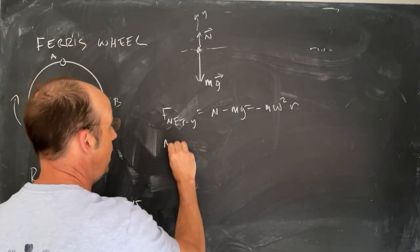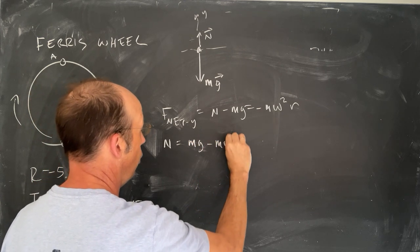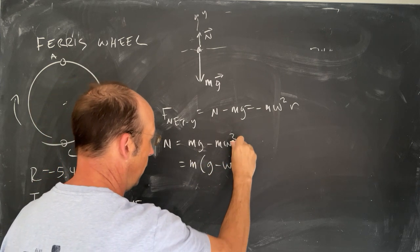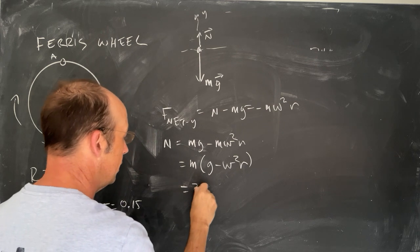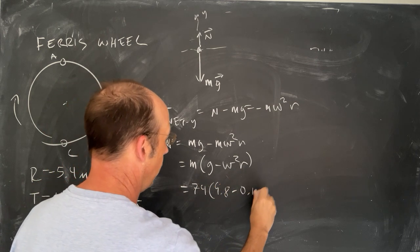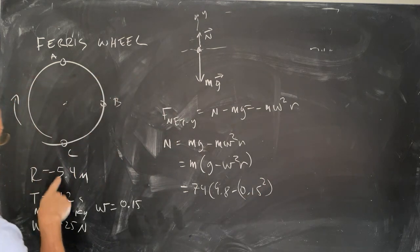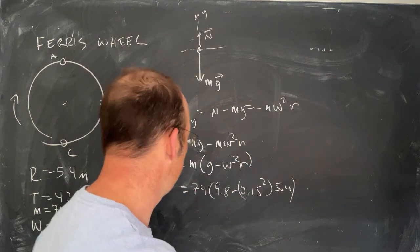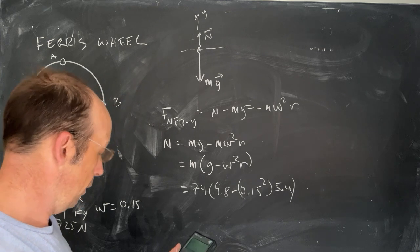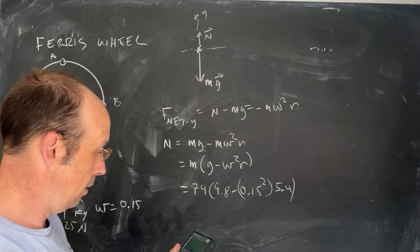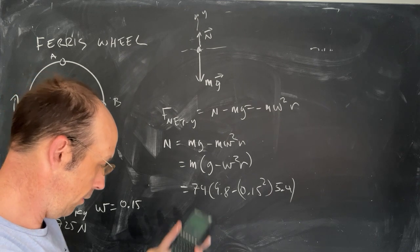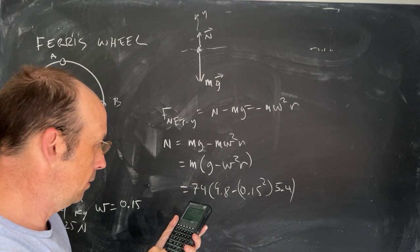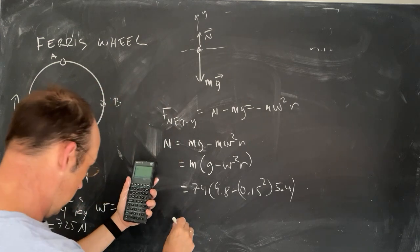Now I want to solve for N. N equals mg minus m omega squared r, and that is equal to m times g minus omega squared r. Let's put in our numbers. 74, 9.8 minus 0.15 squared, and then the radius of the ferris wheel was 5.4. Let's calculate that. I get 716.